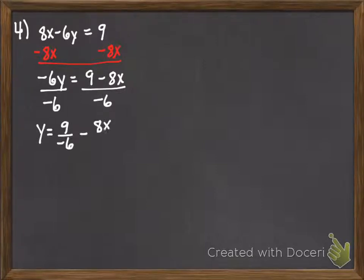And once again, we want to simplify. So we write that as 9 over negative 6 minus 8 over negative 6. And finally, simplifying those fractions, we get negative 3 halves,